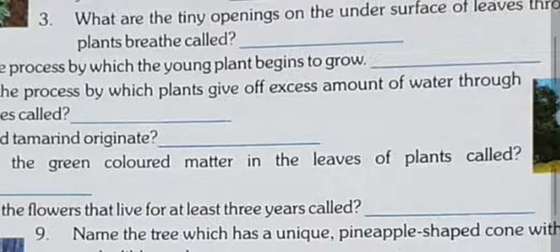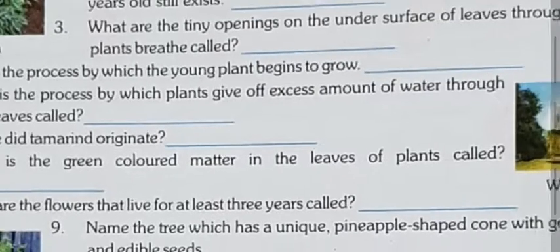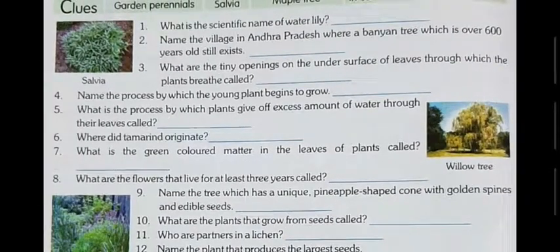Question number four: name the process by which the young plant begins to grow. When we sow a seed in the soil, water it, and it gets ample sunlight and air, the seed starts growing. That process of a seed developing into a sapling or baby plant is termed germination — G-E-R-M-I-N-A-T-I-O-N.